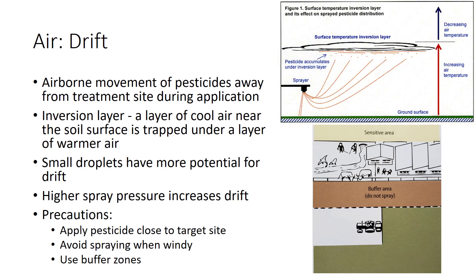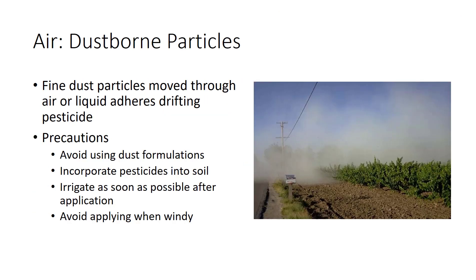Precautionary practices include avoiding spraying when wind speed is high, above 10 mph, or blowing toward sensitive or non-target crops, dwellings, livestock, or water sources. Use buffer zones to increase the distance that spray droplets have to move to reach non-target areas. Use adjuvants to increase spray droplet size when possible.